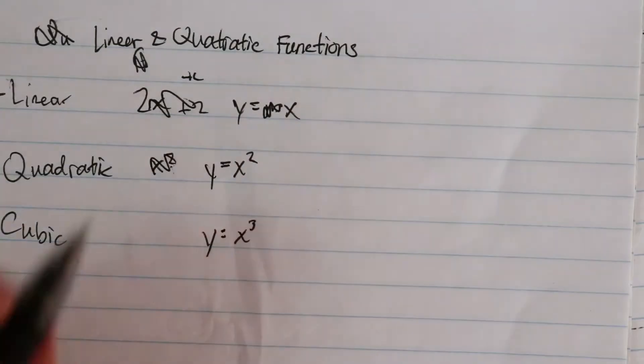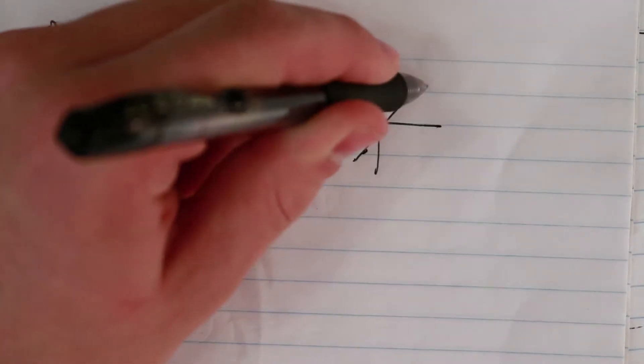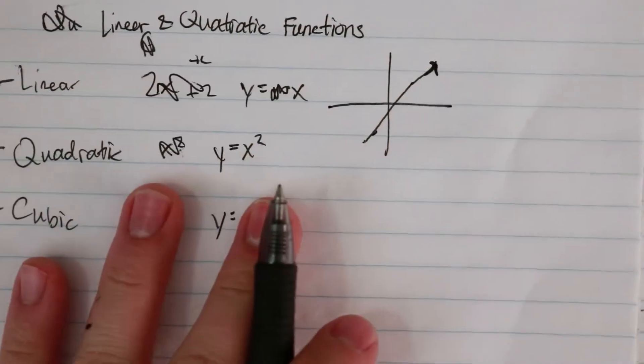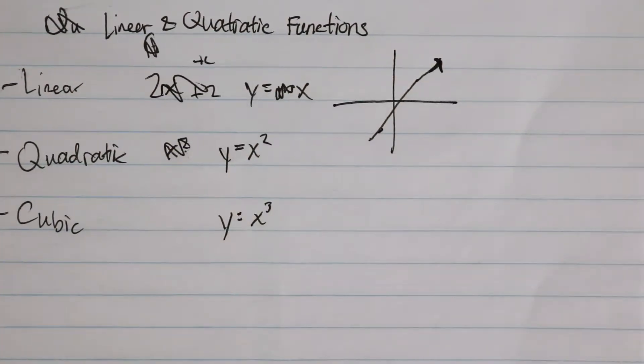What do the graphs of these things look like? So y equals mx plus b - a graph of this is just going to look like a line. One interesting thing about this line is, even though not in my graph, it goes through the origin.